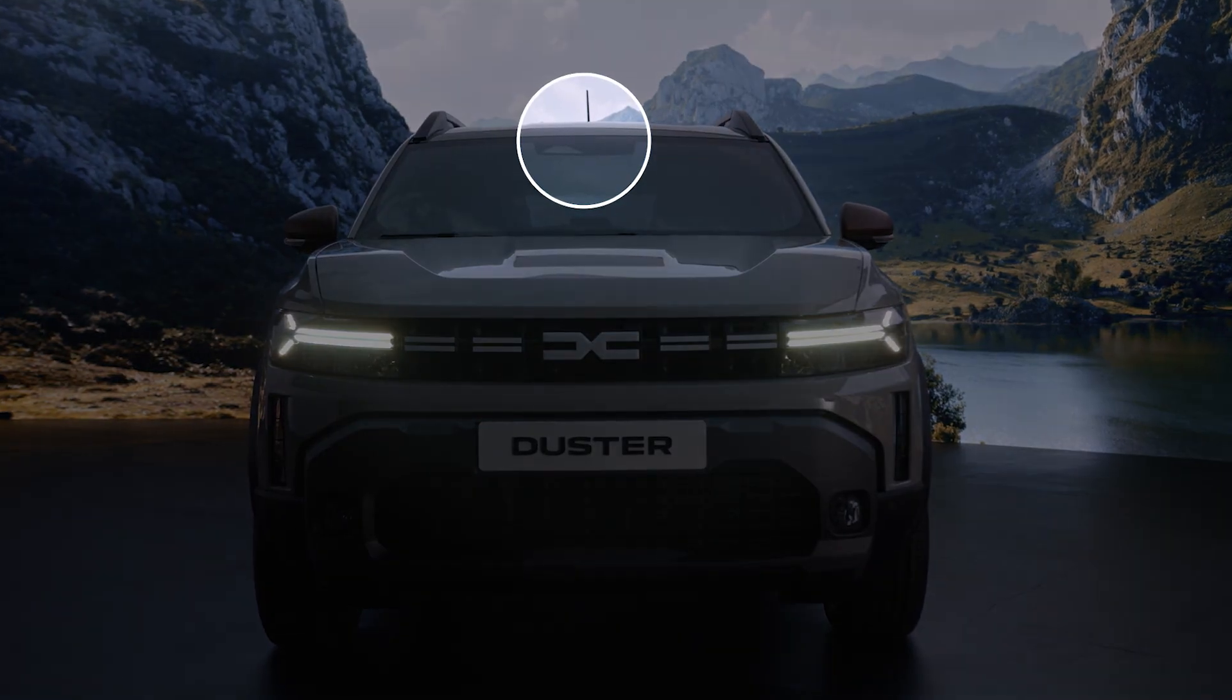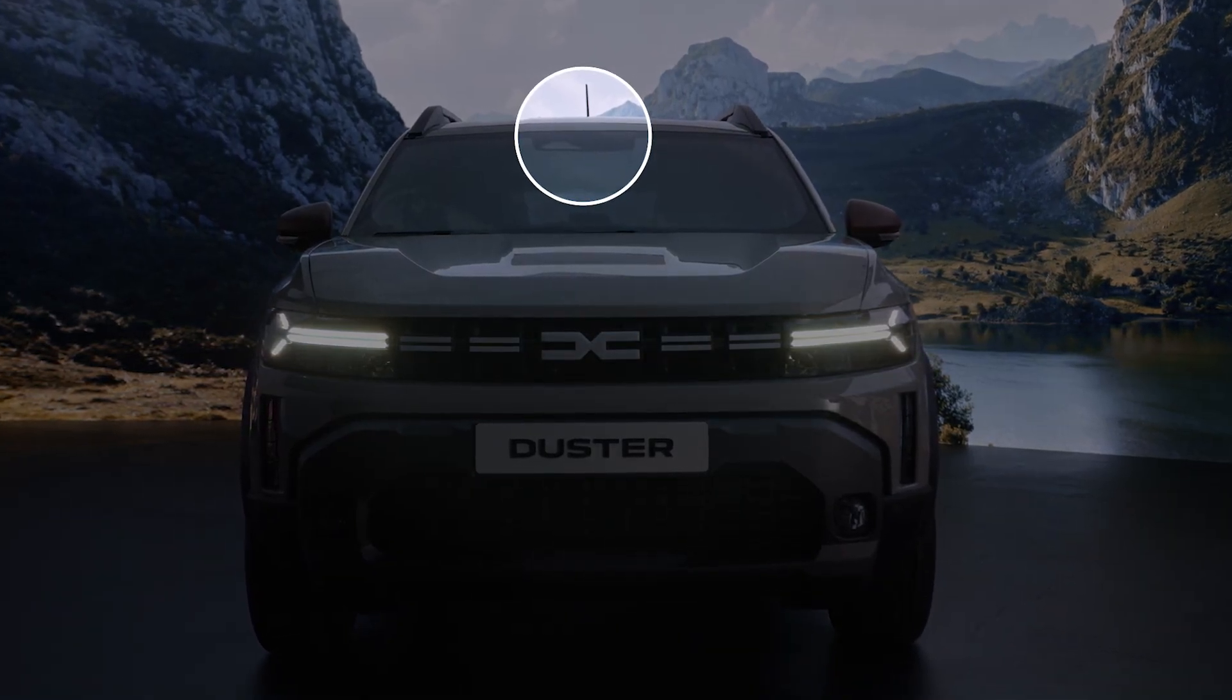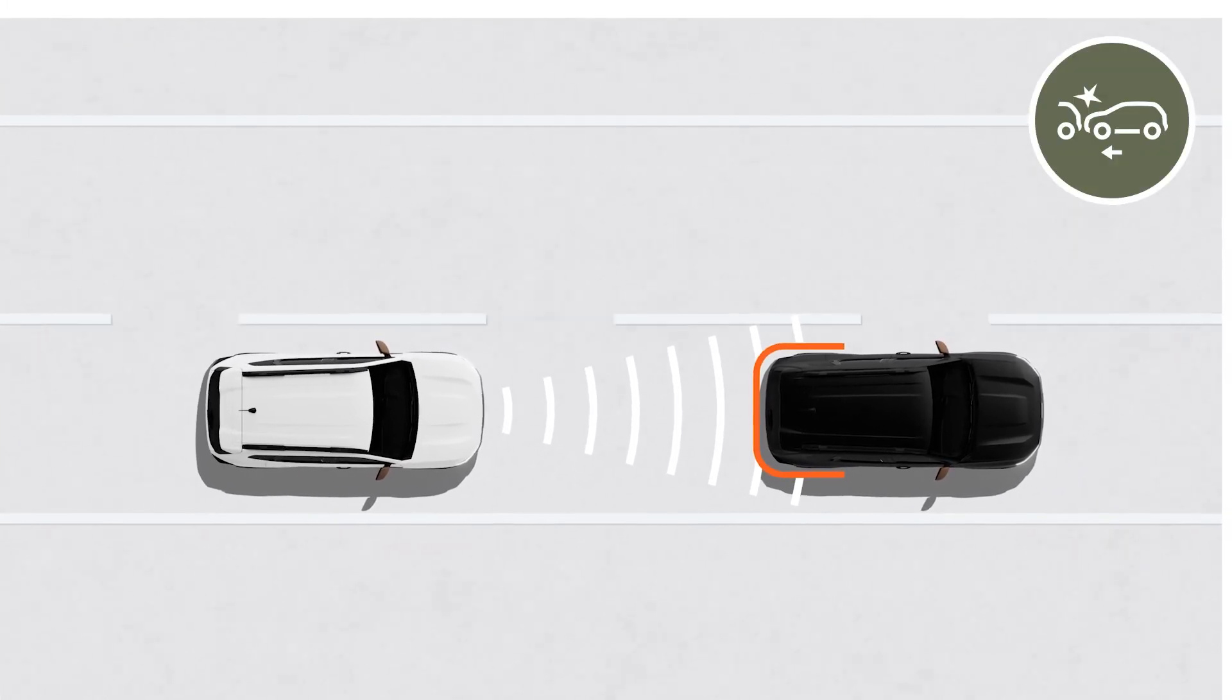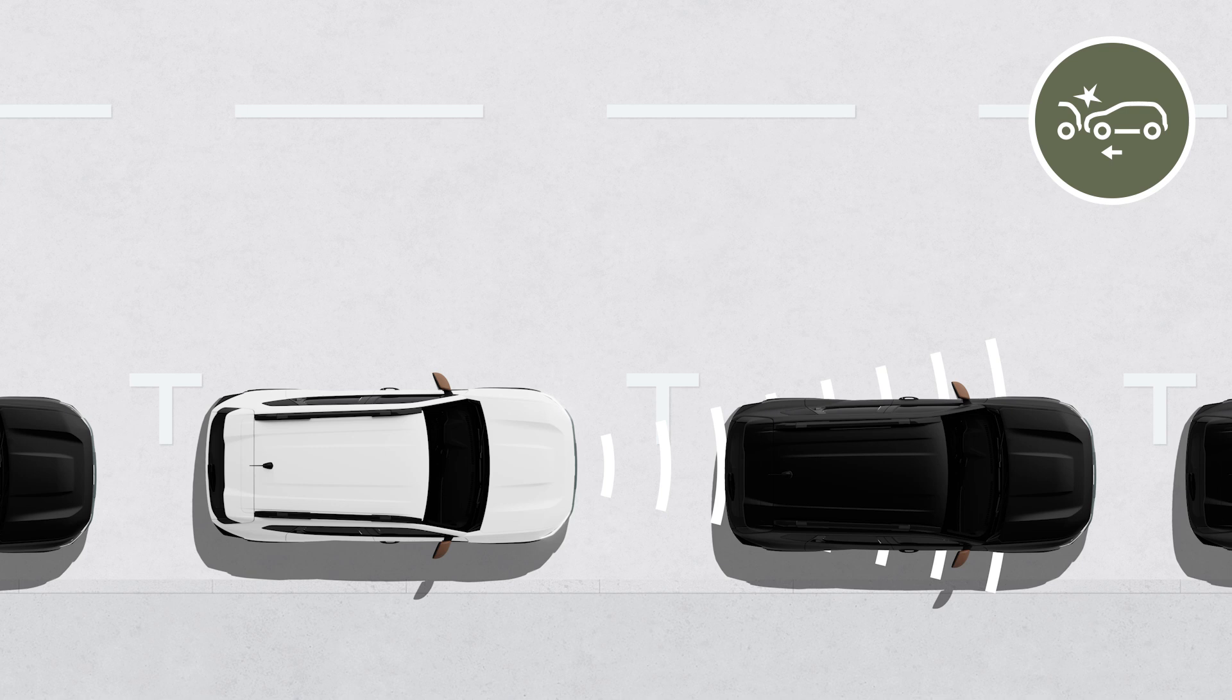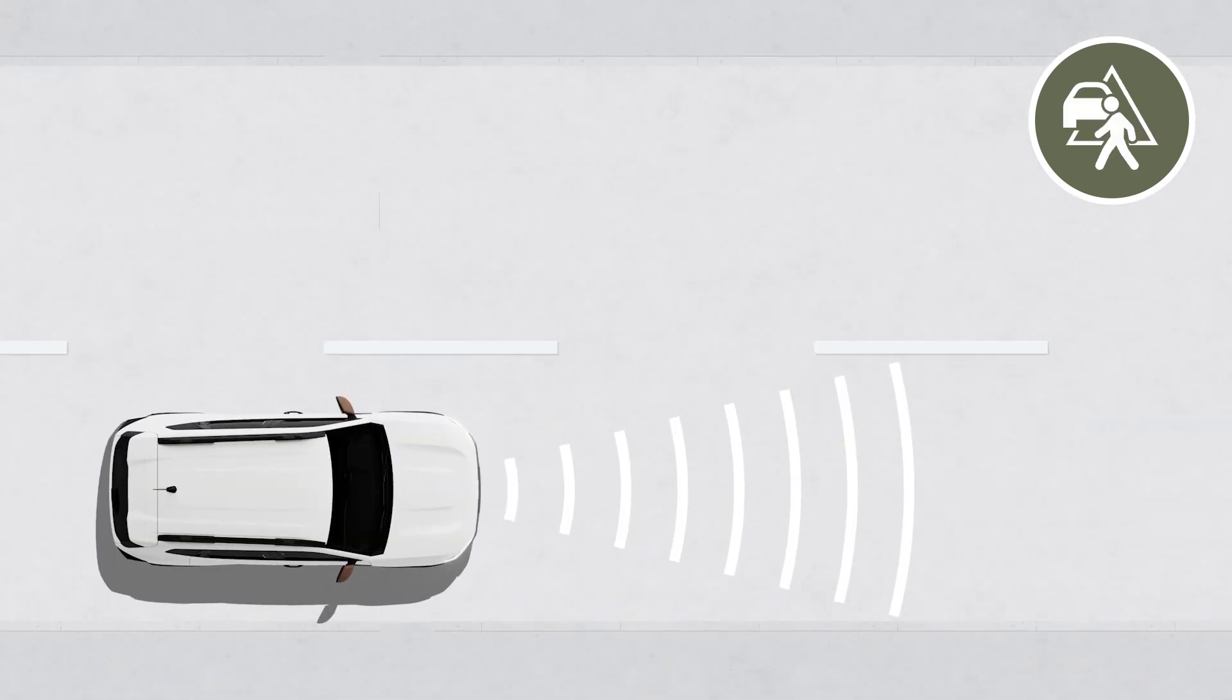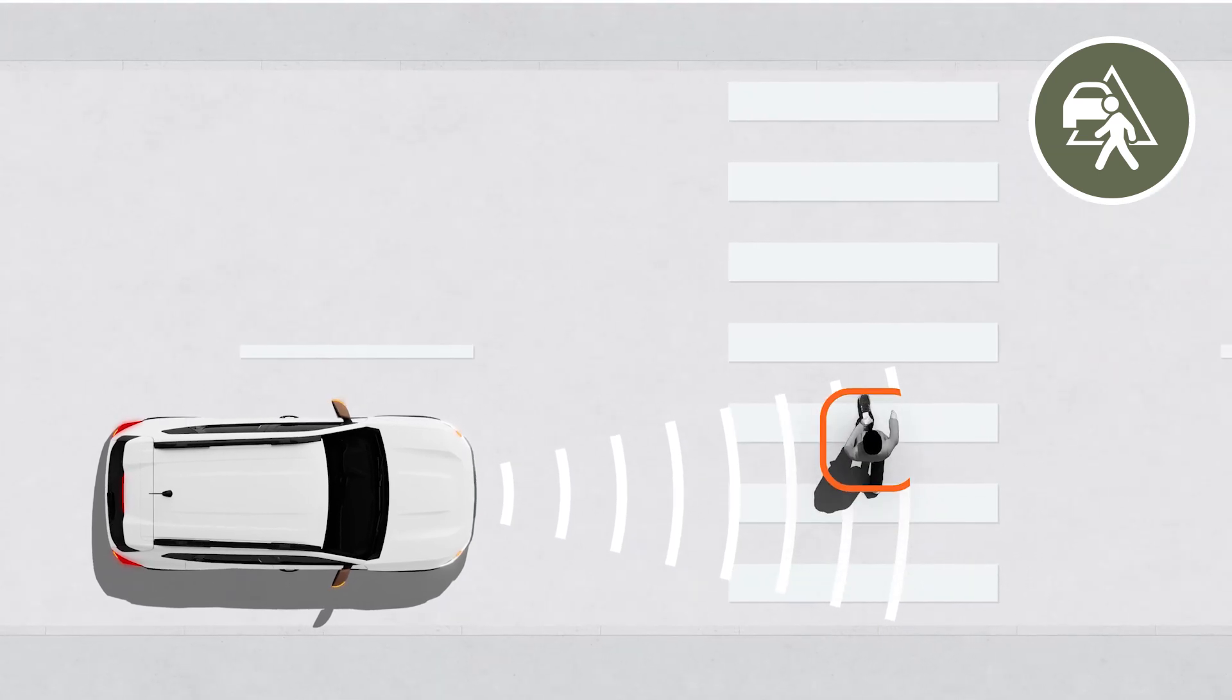The active emergency braking system uses data from the camera on the windscreen and the radar sensor in the front bumper to determine the distance between you and the vehicle in front, whether it is moving or stationary, as well as cyclists and pedestrians ahead, and warns you if there is a risk of collision.